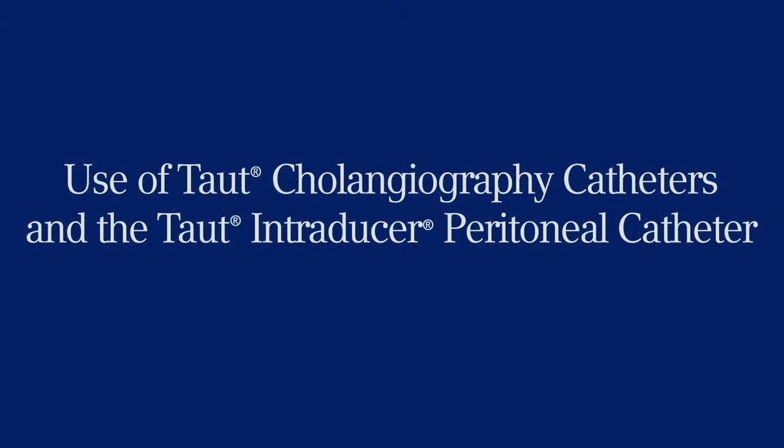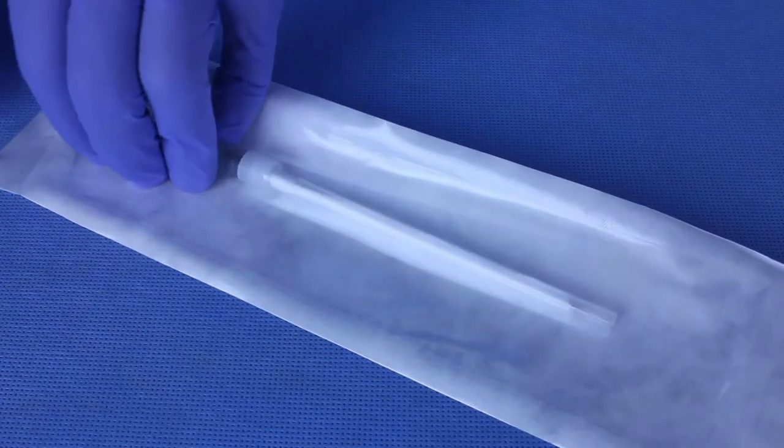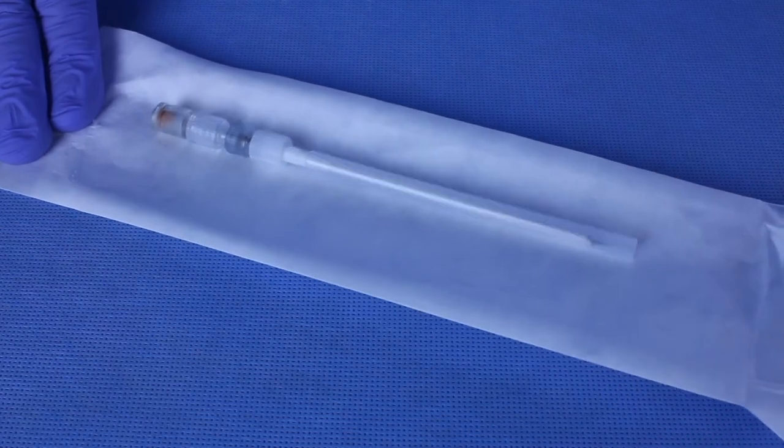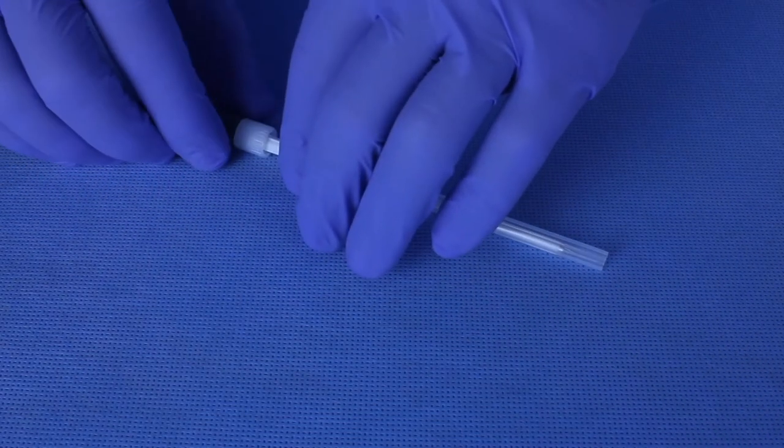Use of taut cholangiography catheters and the taut introducer peritoneal catheter. Using accepted sterile technique, remove the introducer from package. Remove the protective guard from the catheter and needle.